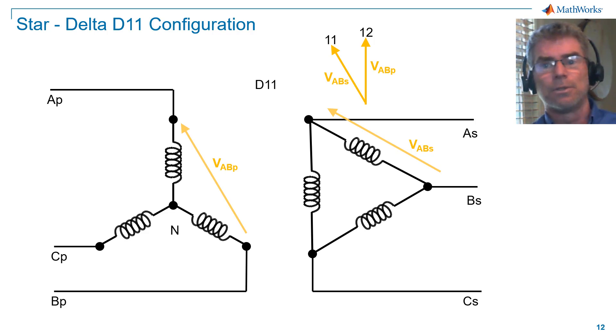With the orientation shown, the system frequency rotates anti-clockwise. And so with D11, secondary line voltage leads primary line voltage by 30 degrees. Like the D1, I'll make one more observation here.